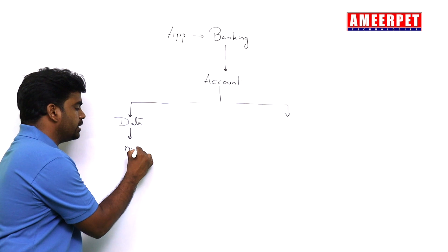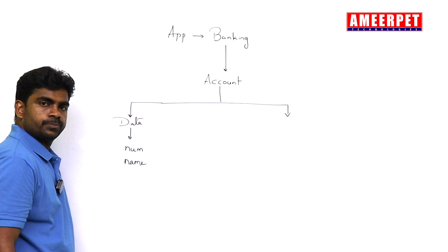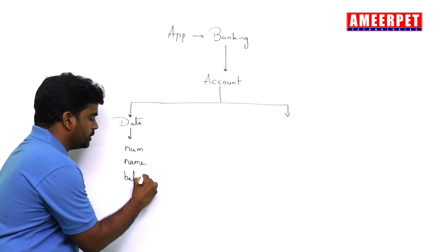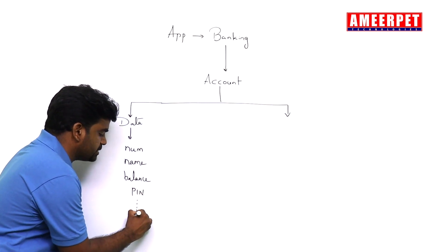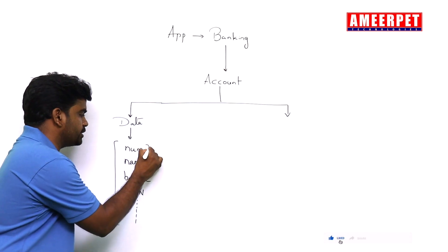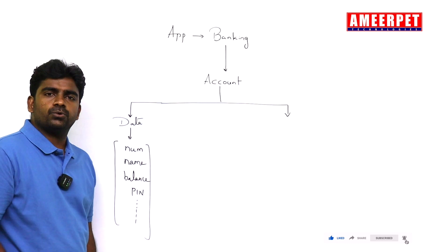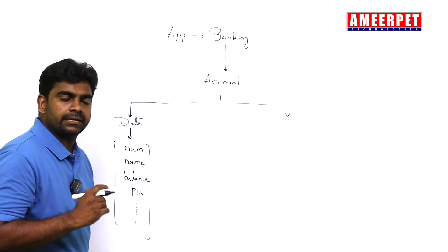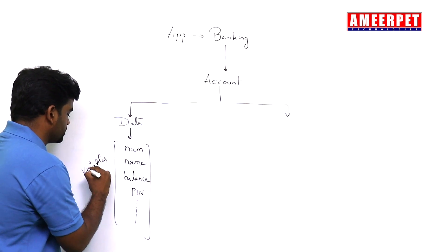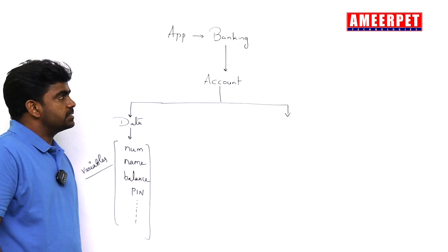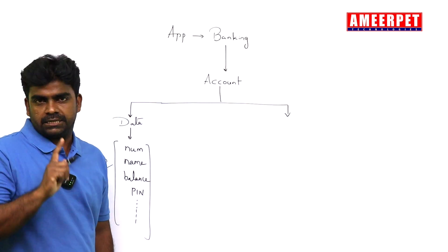The account information — which is called data — includes account number, account holder name, balance in account, PIN number, and IFSC code. This is called information. Where will we store this information? Programmatically, we store the information into variables.